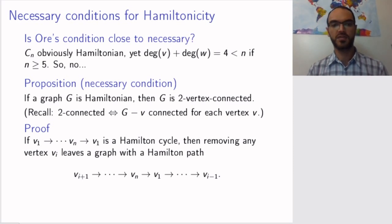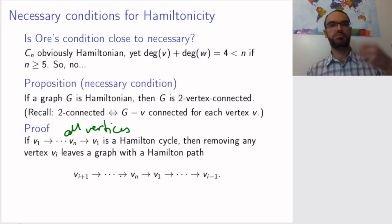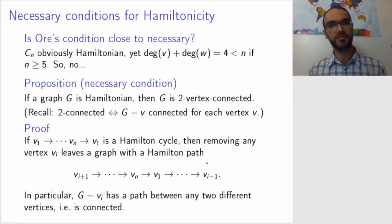If you have a Hamiltonian graph and you have a Hamilton cycle, then if you remove any vertex, this cycle included all the vertices of your graph. So if you remove one vertex, you will break up this cycle into a path. But you still have one path that connects all the remaining vertices. So in particular, the graph you're left with is connected. Therefore, the graph that you started with was, in fact, two-vertex-connected.